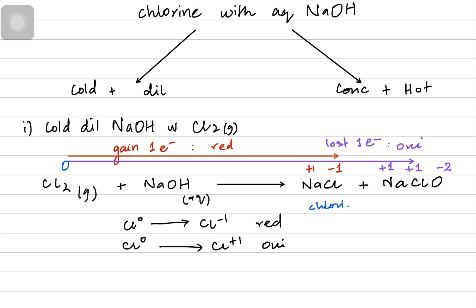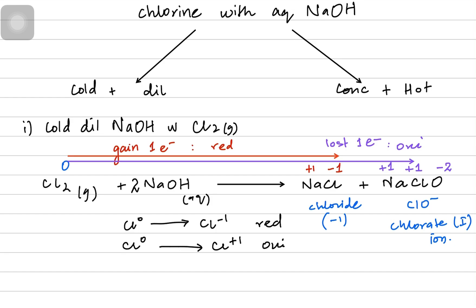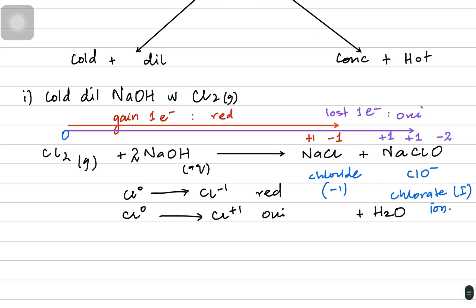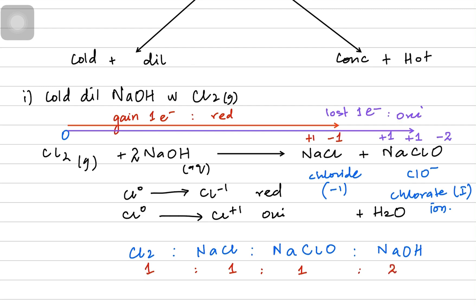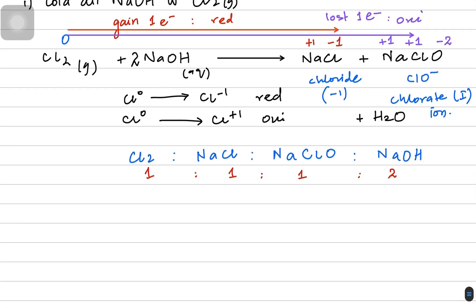NaCl is sodium chloride with Cl at minus one, and NaClO contains the ClO− ion — we call it the chlorate(I) ion, because the one refers to the oxidation number of chlorine. Balancing the equation requires adding 2 NaOH and one water molecule as another product. The key mole ratios are: Cl2 : NaOH : NaCl : NaClO = 1 : 2 : 1 : 1. Remember these ratios for molar calculations.